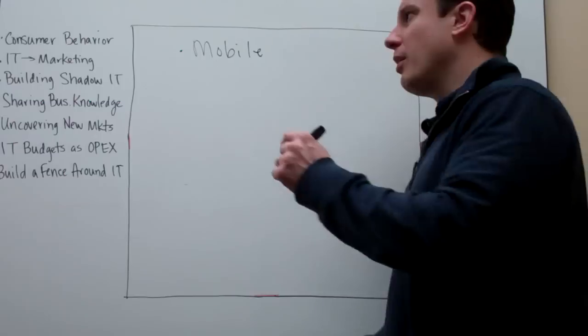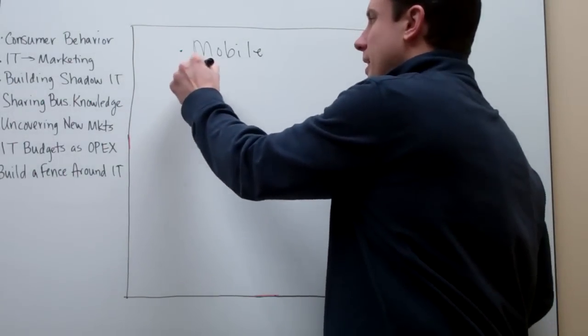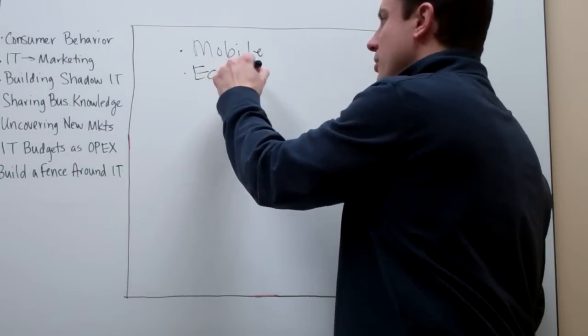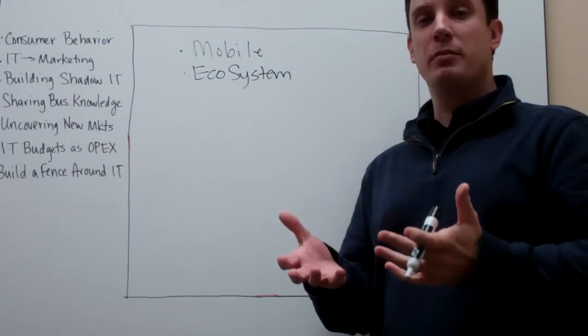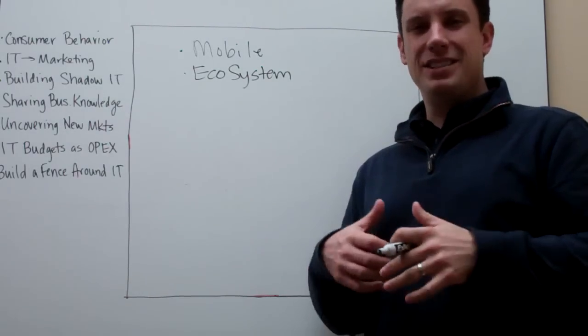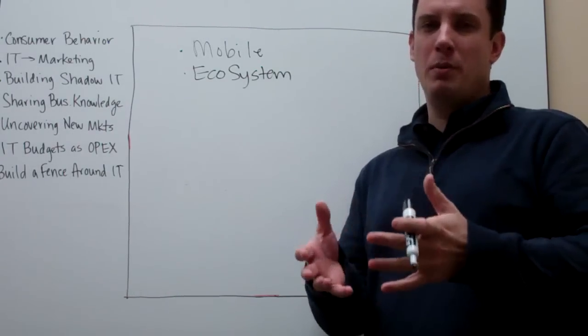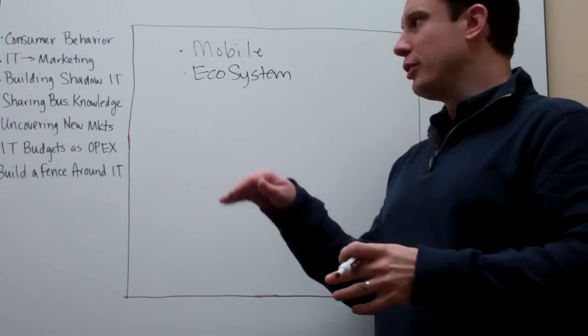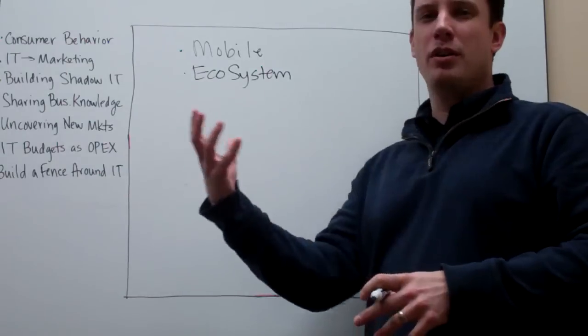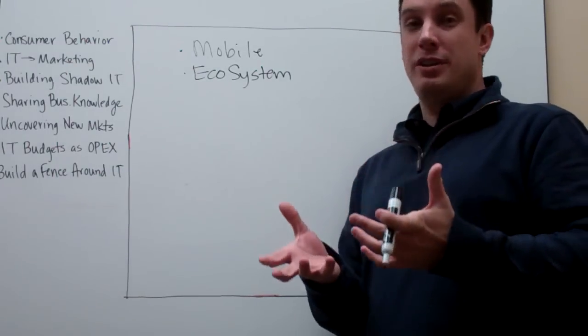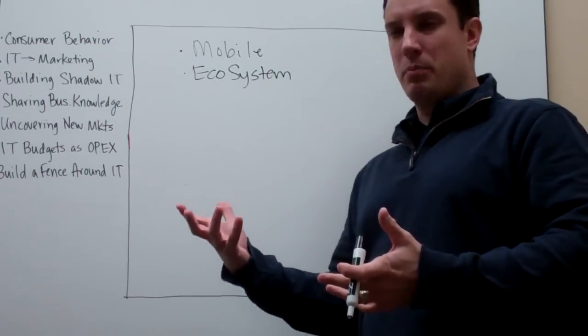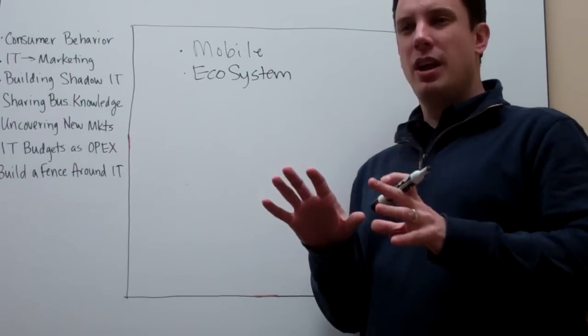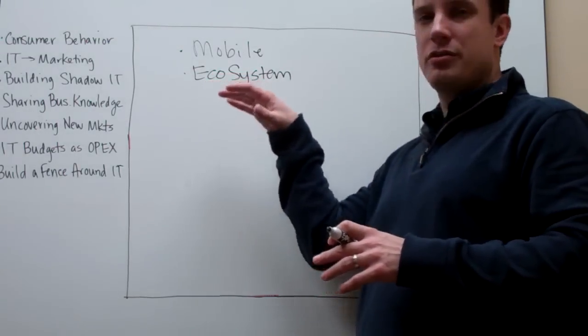Also, you've got to think about what does the ecosystem look like around your mobile strategy. Because people aren't just going to find information from you anymore. They're not listening to you anymore, per se. They're not just coming to your website to learn about you, but they want to learn about what other people think. What are your partners saying about you? What's the community saying about you? Open communities, social media communities, the press, and so forth. So you've got to be able to have ways to interact with all those things.